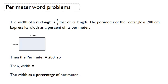Perimeter word problems. The width of a rectangle is two-thirds that of its length. The perimeter of the rectangle is 200 centimeters. Express its width as a percent of its perimeter.